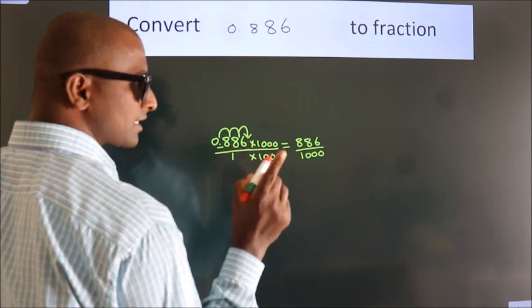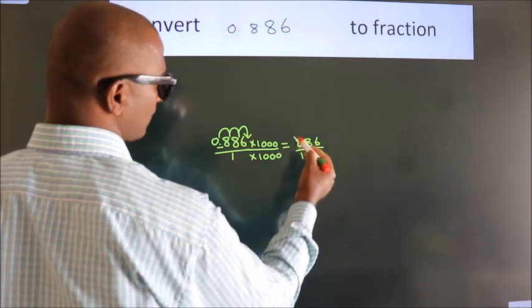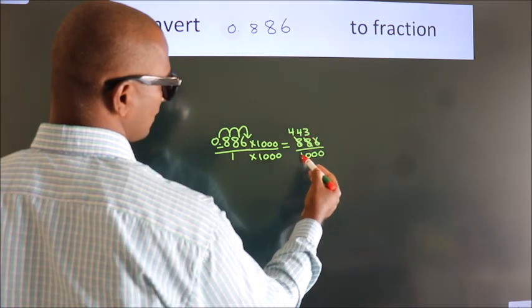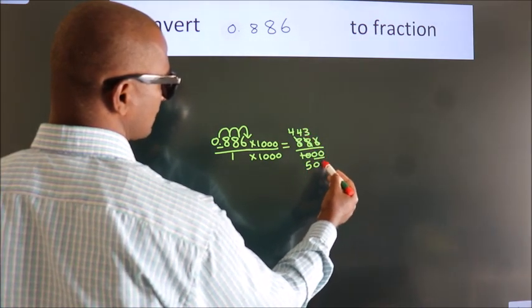Now I cancel with 2. 2 fours, 2 fours, 2 threes, 2 fives. These zeros as it is down.